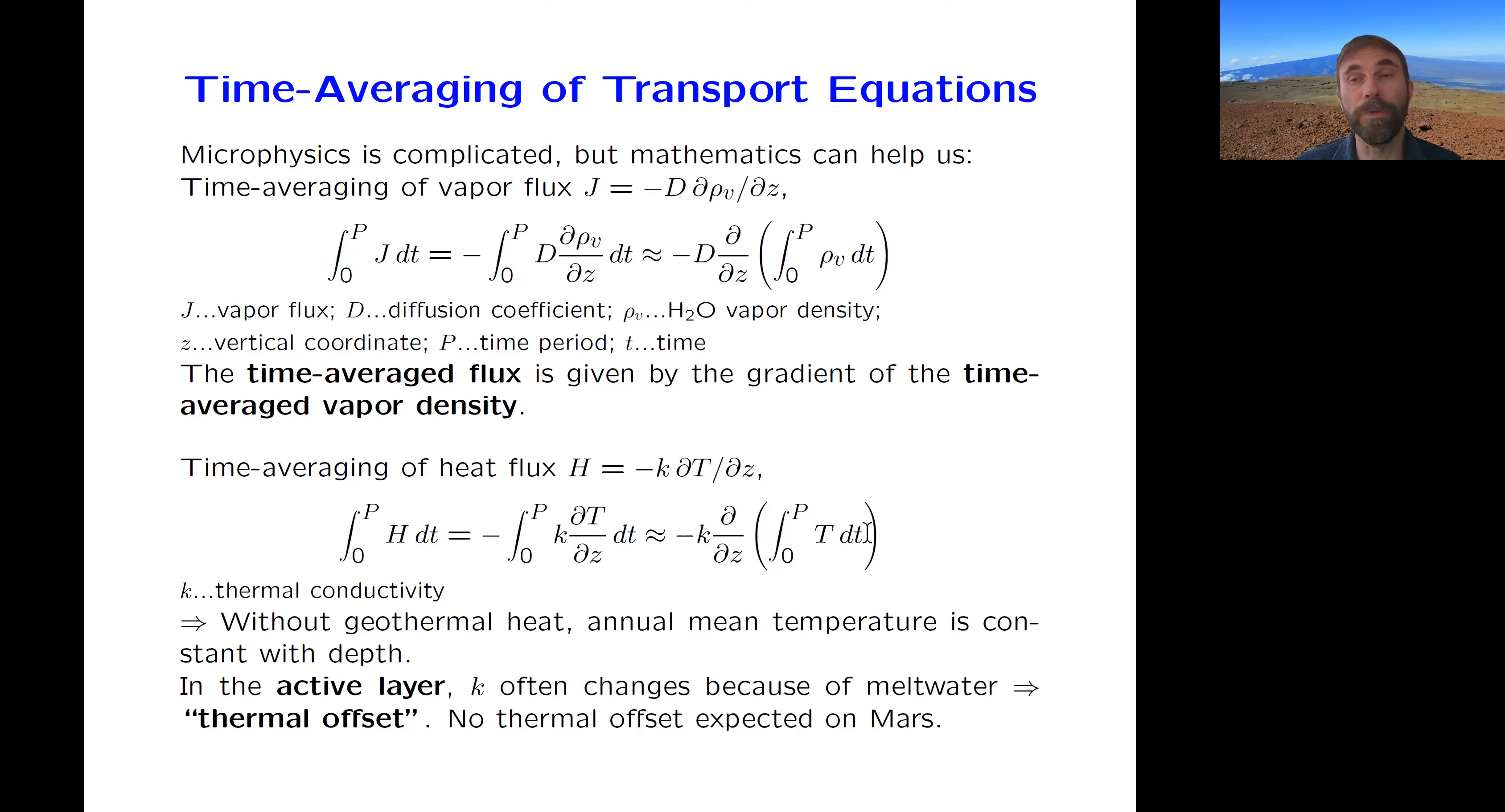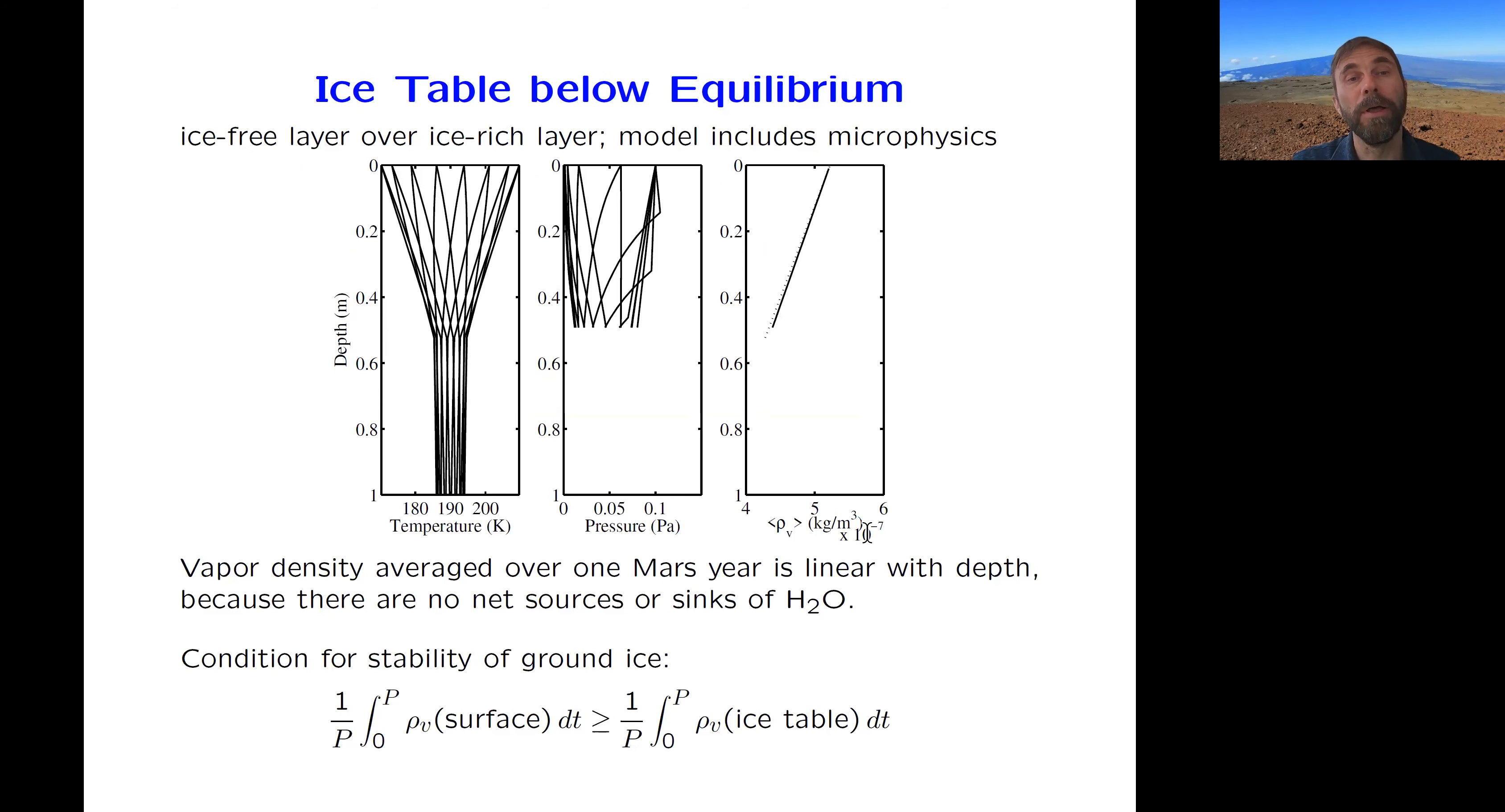Mathematically, one can do the time averaging also with the heat flux, which is an interesting exercise, but I'll skip it here. Mathematically, this is the result of microphysical modeling of vapor diffusion in the sense that there is not just vapor diffusion, but also temporary condensation or desublimation of the vapor when it's cold enough and so on. But if one averages that over a Mars year, and Mars years are fairly repeatable, weather on Mars is actually quite repeatable. If one averages over a Mars year or many Mars years, the time averaged vapor density between the surface and the ice table is going to be a straight line. And we can infer this line just by looking at the value on the surface and the value of the ice table.